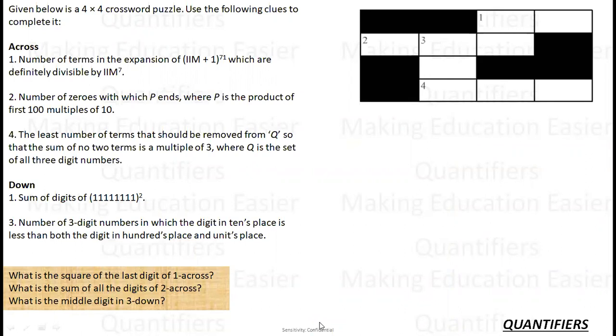Let's see what's next. Given below is a 4x4 crossword puzzle. Use the following clues to complete it. You have a game of crossword. Use some clues to fill it. First, there is 1: the number of terms in the expansion of m+1 to the power 71 which are definitely divisible by m to the power 7. So, use of algebra, let's understand a few things first.